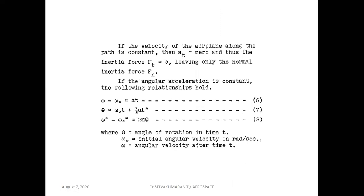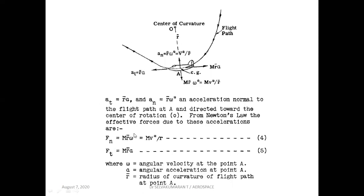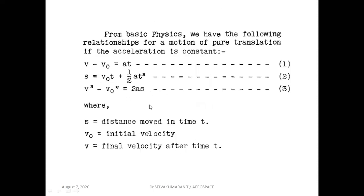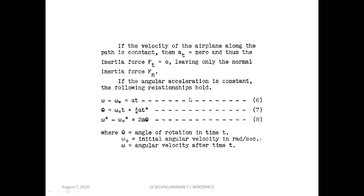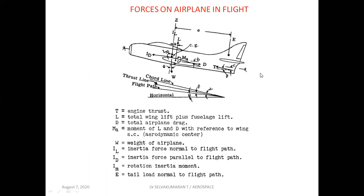For angular acceleration, the relationship is: omega minus omega-naught equals alpha·t, where omega is the angular velocity after time t, omega-naught is the initial angular velocity in radians per second, and there is the angle of rotation in time t. These formulas will also be used to solve simple problems. You will study these in detail in the flight dynamics course.